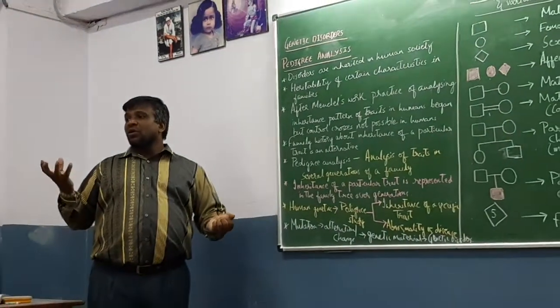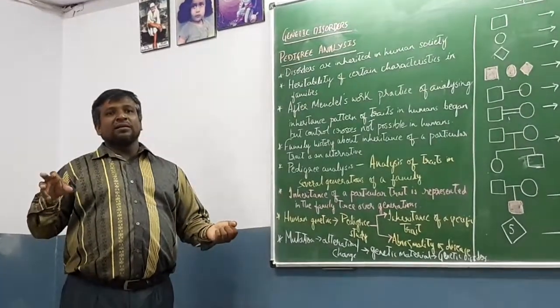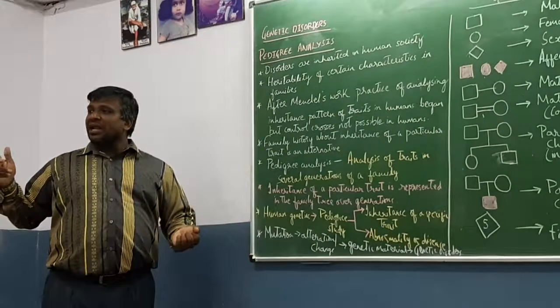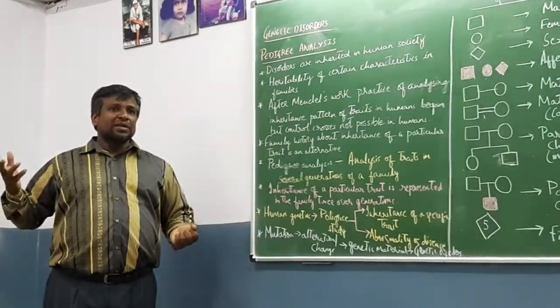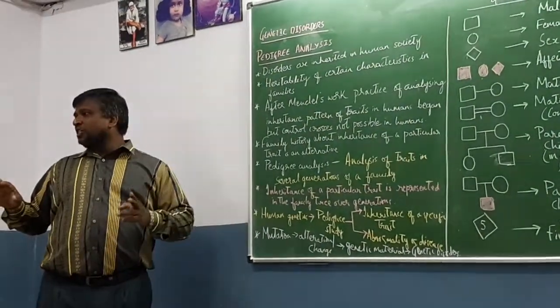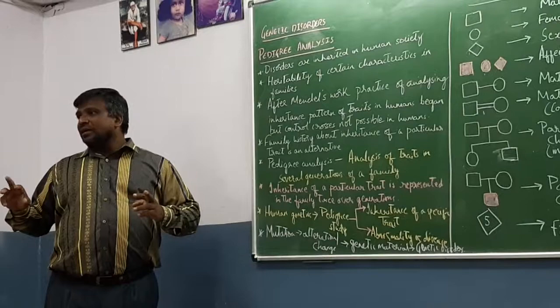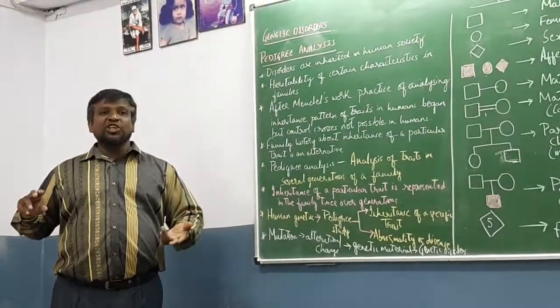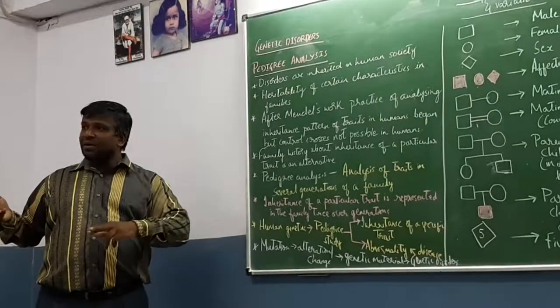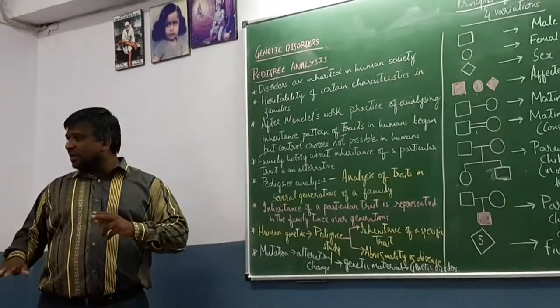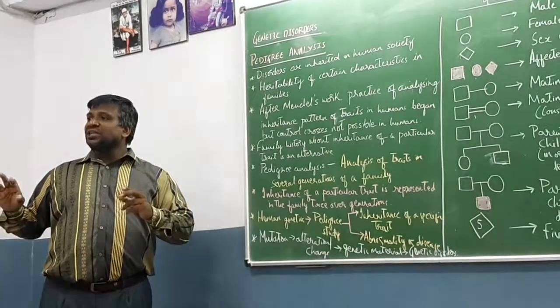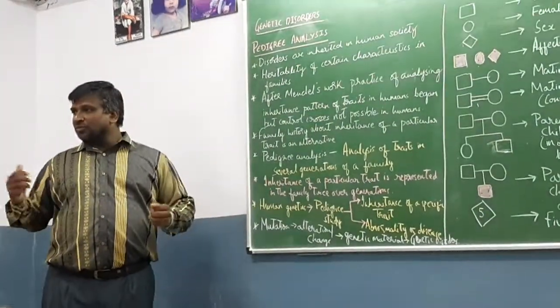One is genetic disorders. Second is chromosomal disorders - because of number or because of changing the chromosomal structure. There might be chromosomal aberration. Because of number, increasing or decreasing, we call it numerical aberration. Structural aberration is changing the structure of chromosomes.